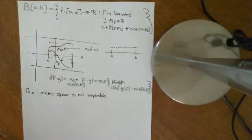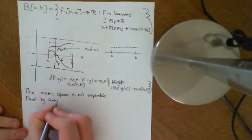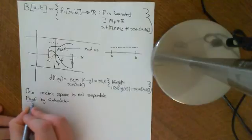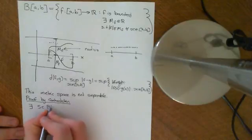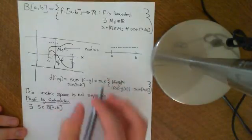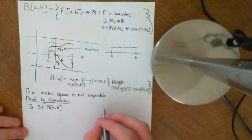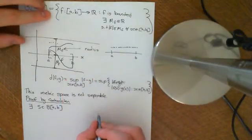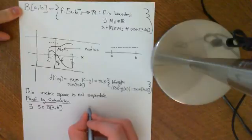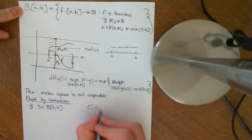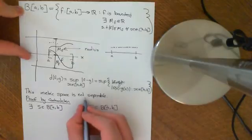We'll do a proof by contradiction. Suppose that B(A,B) is separable. That would imply there exists some set S which is a subset of B(A,B). The first thing to note is that B(A,B) is absolutely not a countable set. To prove B(A,B) is uncountable, we can find an uncountable subset — I'll call it C, a subset of B(A,B) — and work down here.